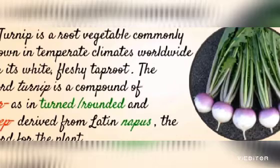Turnip and beetroot almost look similar. Do you know the difference between them? They look similar and taste almost the same as well. From both plants we mainly eat the root, which has the shape of a ball. Beetroot is violet in color both on the surface and inside. On the contrary, turnip has a lot of different colors. The taste of both turnip and beetroot is sweet and a little bit spicy.